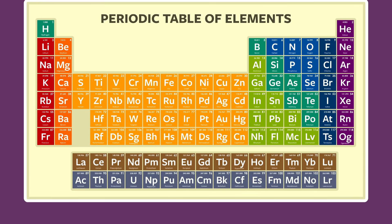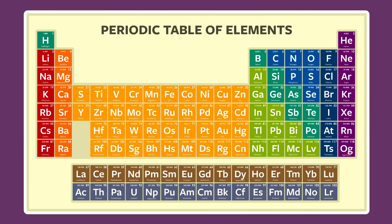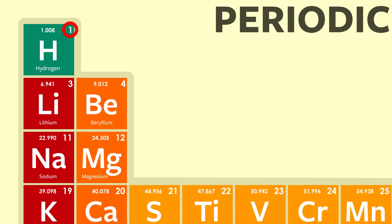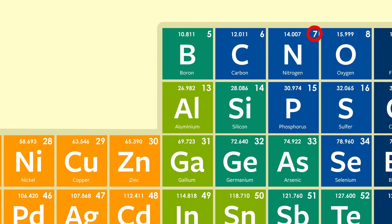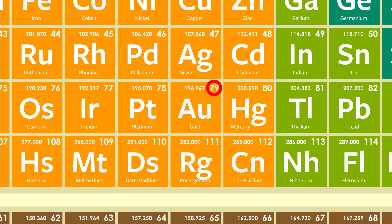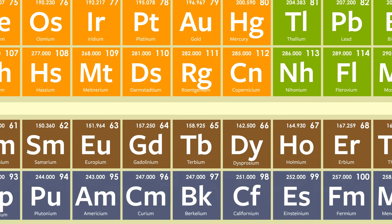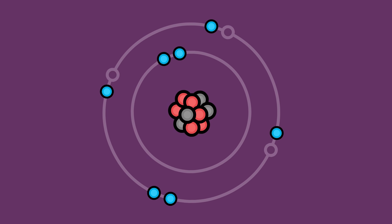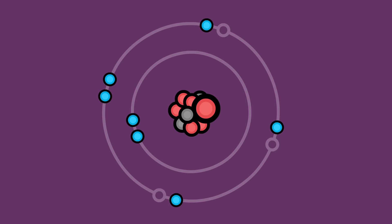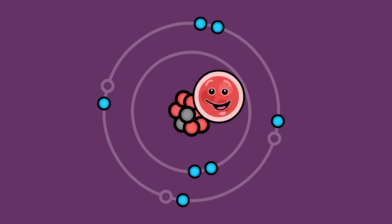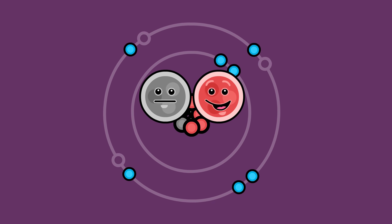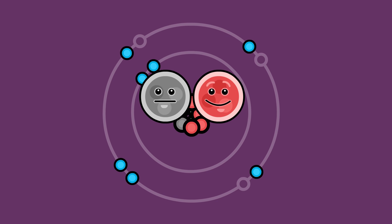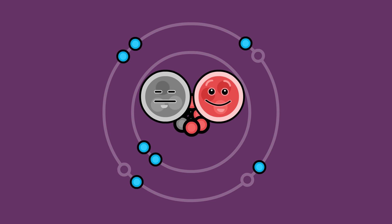When you look at the periodic table, you find that each element has a number. Hydrogen is number 1, nitrogen is number 7, gold is number 79. This number tells you how many protons a single atom of that element contains. Protons are positively charged, neutrons are neutral. They don't actually have little faces on them, but it helps to remember.